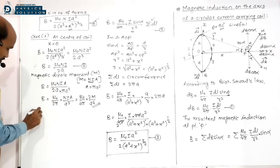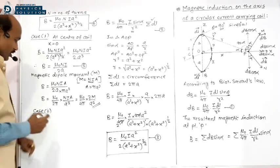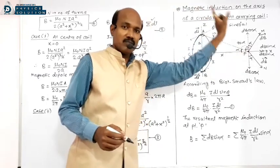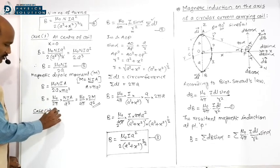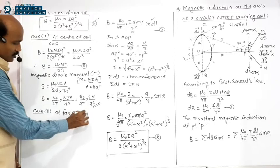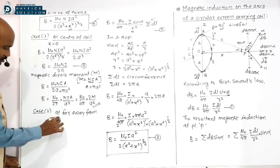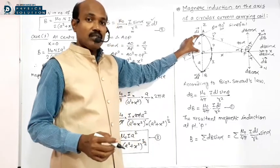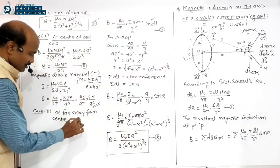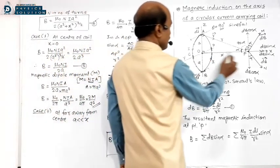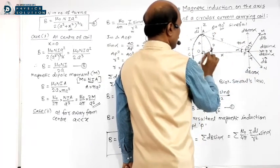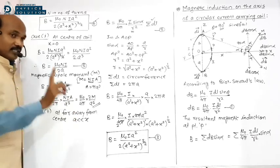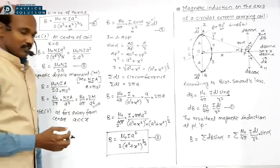Case 2: point P is far away from the center, meaning x is very large compared to the radius a, i.e., a << x. In this case, a² can be neglected compared to x² in the denominator.